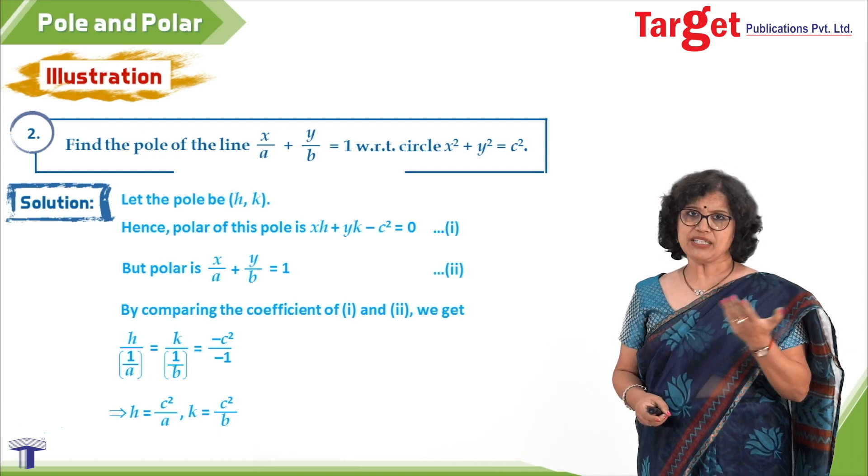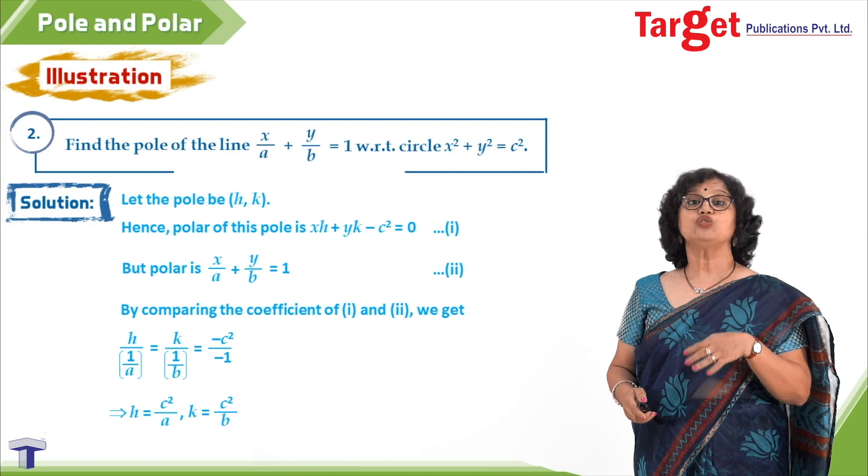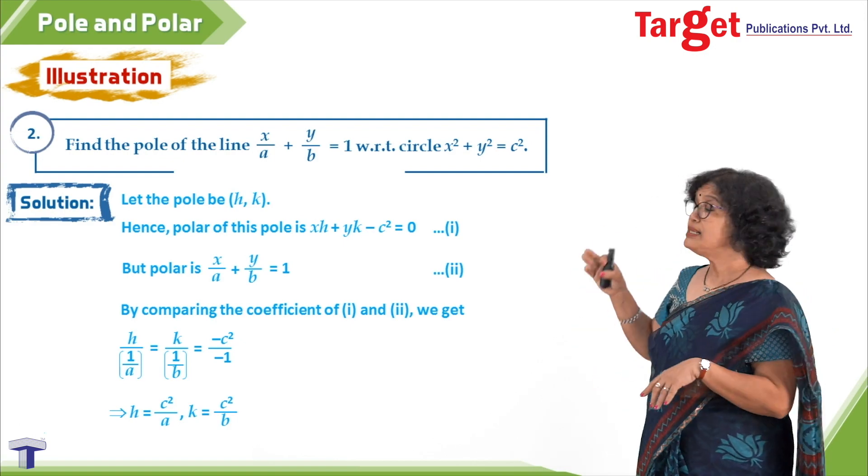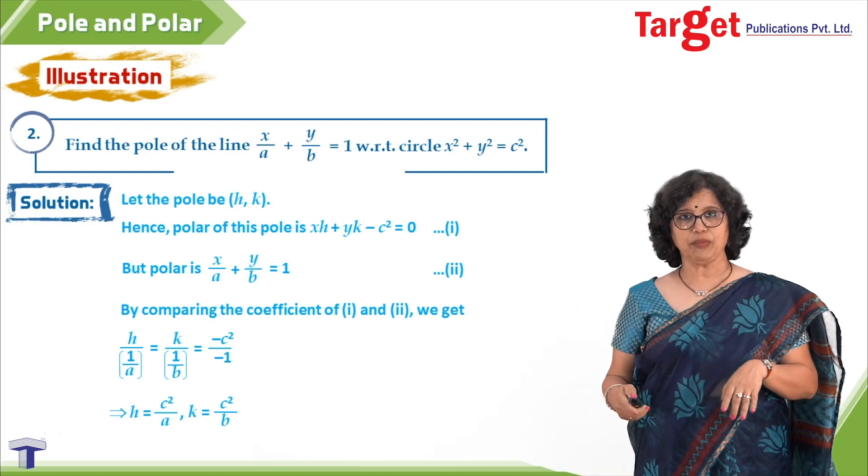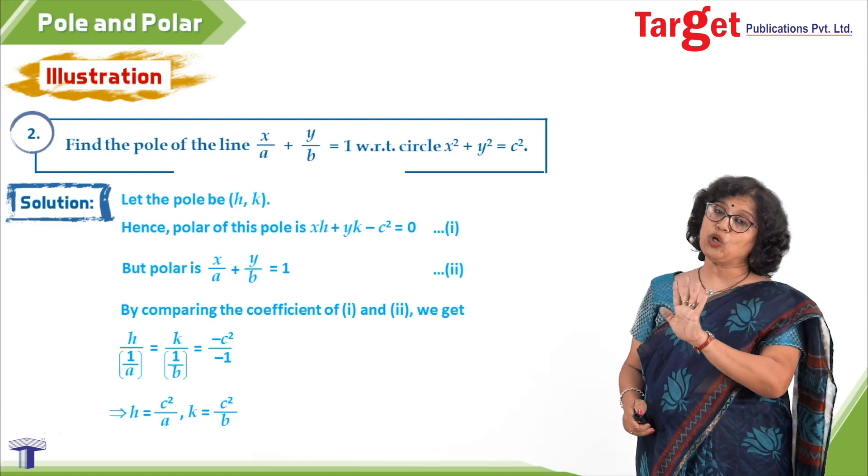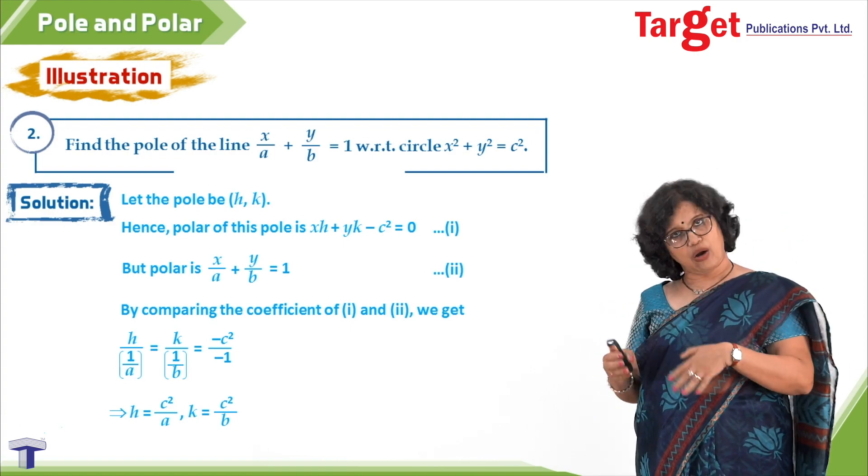And what was our job? To get the pole. This (h, k) we were interested in knowing. So the final answer for the pole should be (c²/a, c²/b). So you can get the pole also if the polar is given, or otherwise.